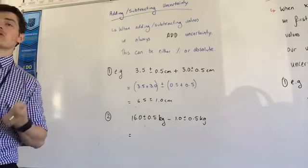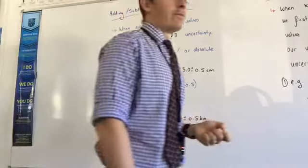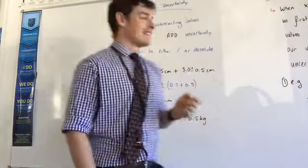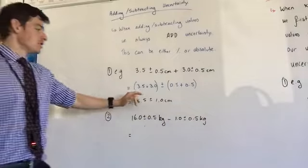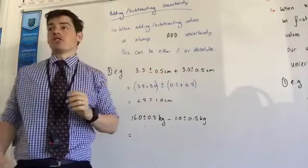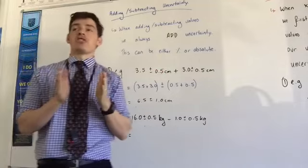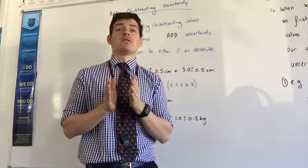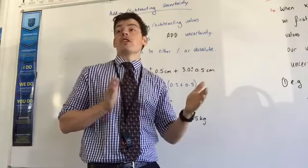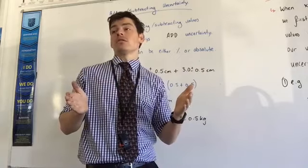Now the reason we do that is we always assume worst case scenario. Let's say this is my measurement. I've got 3.5 plus or minus 0.5 centimeters. What that means is the object that I've measured is 3.5 centimeters around about. It could be 4, it could be 3, correct? Yes.